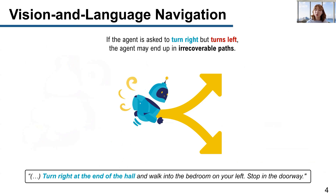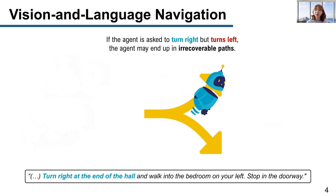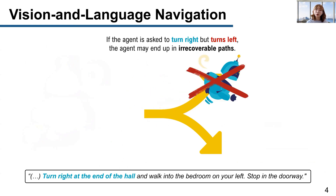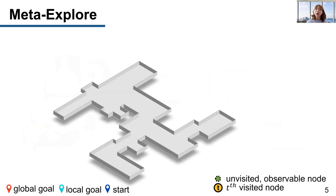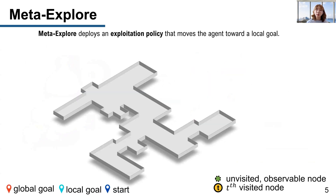A classical challenge of VLN is that it is hard to recover mistaken actions. In this paper, we propose a hierarchical navigation method called Meta Explore, which uses an exploitation method called Local Goal Search with a novel semantic visual representation.